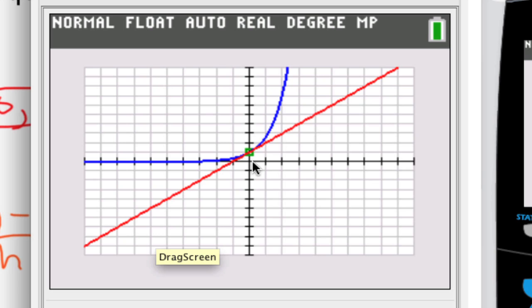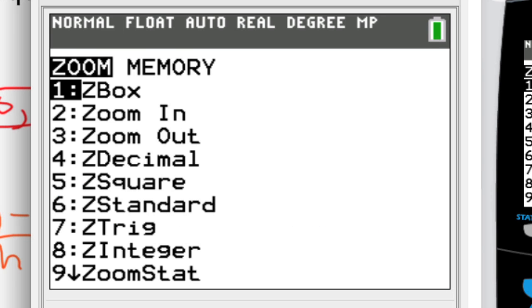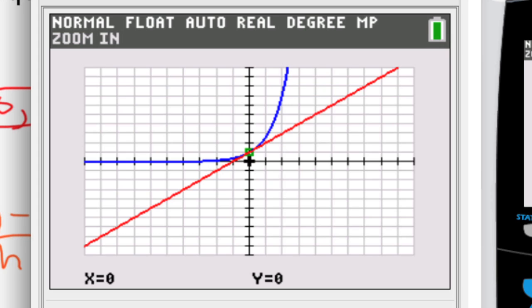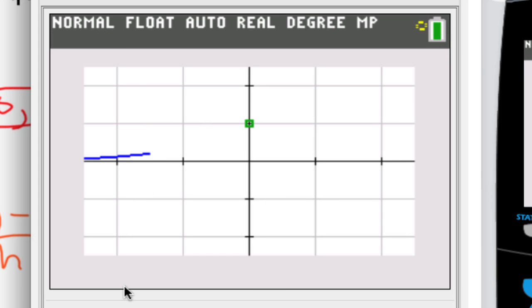Let's go ahead and zoom in to get a better look at this. So click on zoom and then press 2 to zoom in. We want to zoom in at the origin, and here we are with a better close-up view.